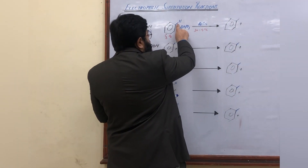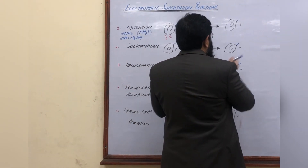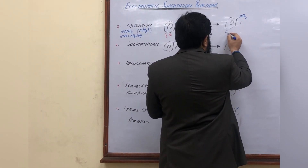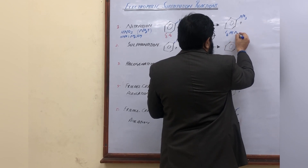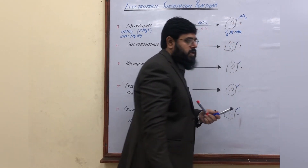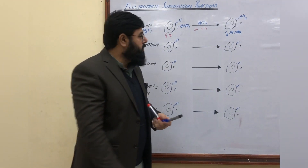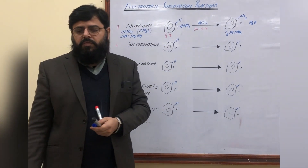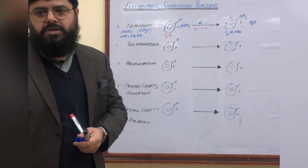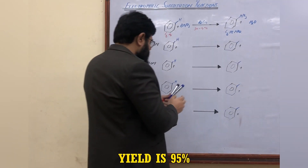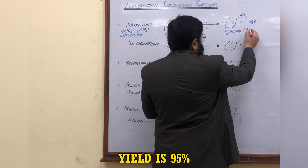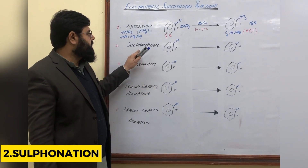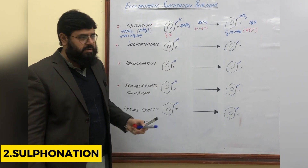The proton is replaced by the nitronium ion and the product has the molecular formula C₆H₅NO₂. Water is produced as a byproduct during this reaction. The yield of this nitration reaction is 95 percent.